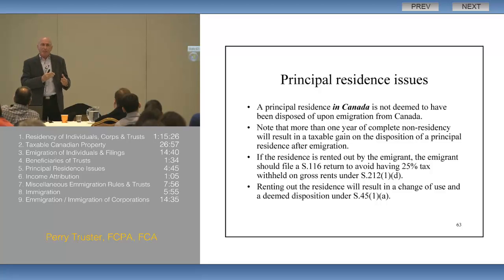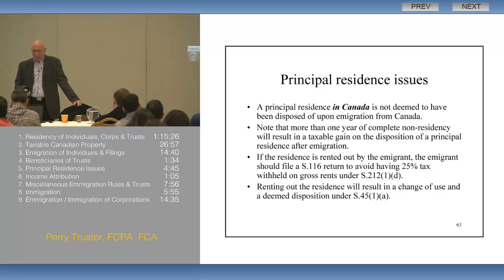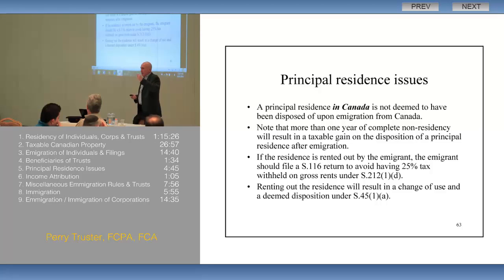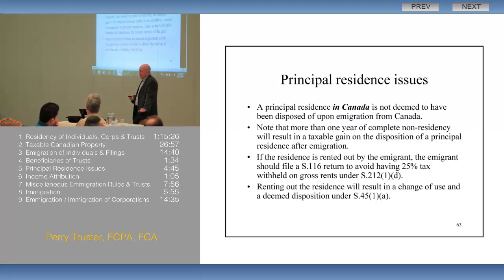You want to have the deemed disposition when you leave Canada, presuming your home is worth more than its cost, because that gain is going to be exempt in any event. Then you'll file your return as a non-resident under Section 216 — or Section 116 rather — which will allow you to file a tax return in Canada based on net income, to avoid paying 25% withholding tax on the gross rent.